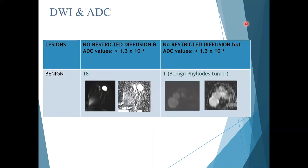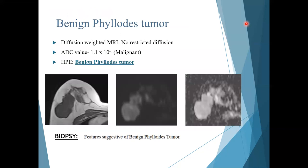18 out of 50 patients showed breast lesions with no restricted diffusion and had an ADC value greater than 1.3 × 10⁻³, suggestive of benign etiology. However, one patient had a breast lesion with no restricted diffusion but an ADC value less than 1.3 × 10⁻³, and on histopathology this turned out to be a benign phyllodes tumor. The benign phyllodes tumor showed no restricted diffusion but its ADC value of 1.1 × 10⁻³ was in the malignant range, making it a mismatch in our study.